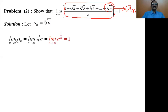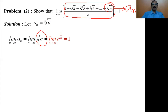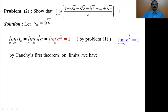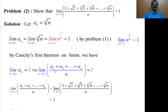What is the limit of a_n? The limit of a_n as n tends to infinity is the limit of the nth root of n as n tends to infinity. The nth root of n can be rewritten as n to the power 1/n, and we have just proved in problem 1 that this limit equals 1. Therefore, by Cauchy's first theorem on limits, if the limit of a_n is L, then the limit of the arithmetic mean of the first n terms is also L.